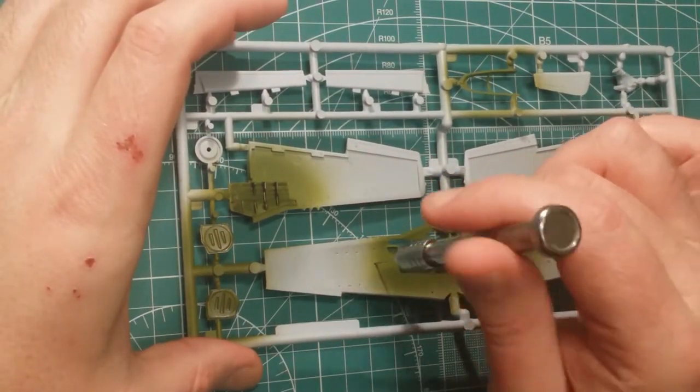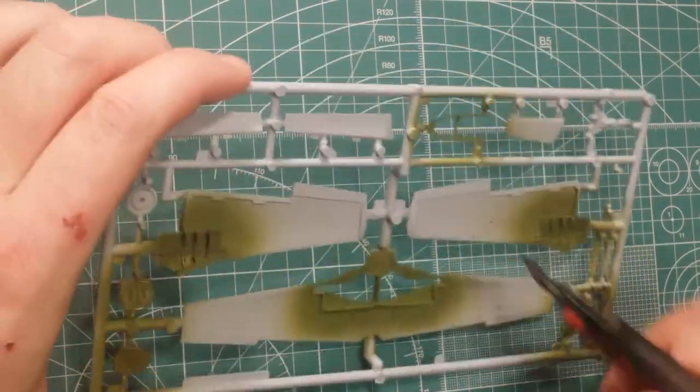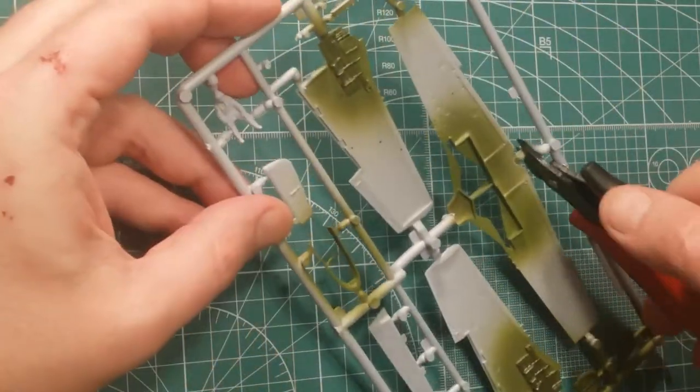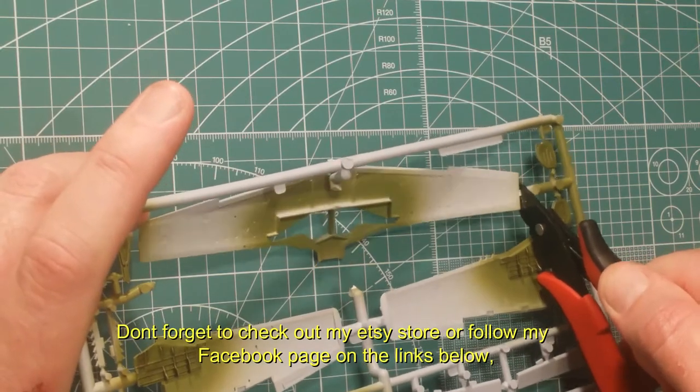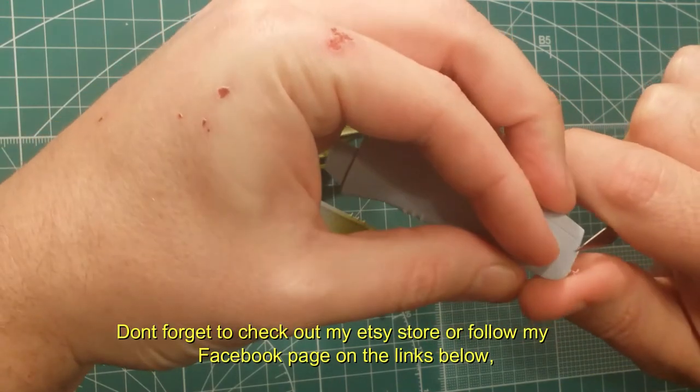Now, this is something I forgot to do on the Tuskegee. But I did on the two subsequent ones. So, use your little pin vise and drill a couple of little holes. Locator holes for your drop tanks if you want to fit them. You can do it afterwards, but it is a pain.